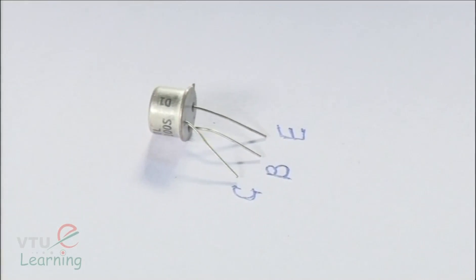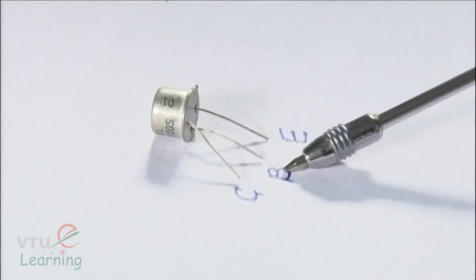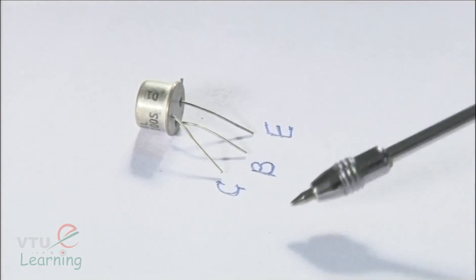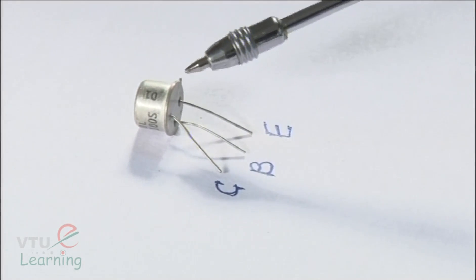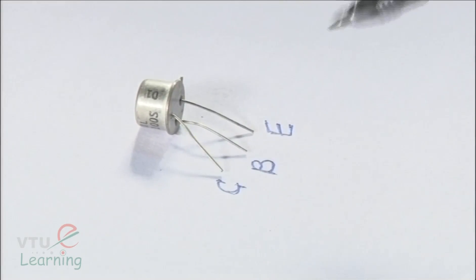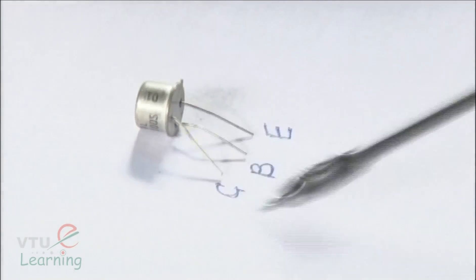A transistor is basically a semiconducting device consisting of three terminals having two junctions. The three terminals are emitter, base, and collector. Given a transistor in hand, these three terminals are identified by referring to the notch in the device. The terminal very close to the notch is identified as the emitter. Going clockwise, next comes base, and the next terminal is collector.